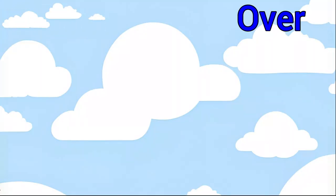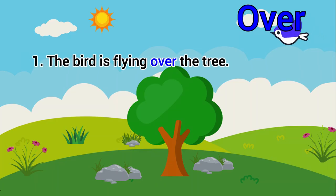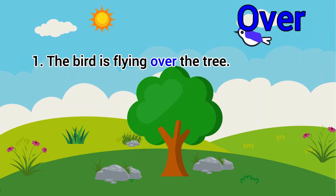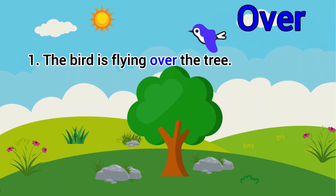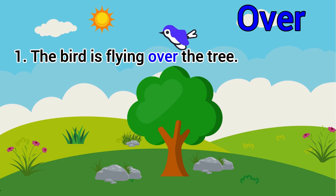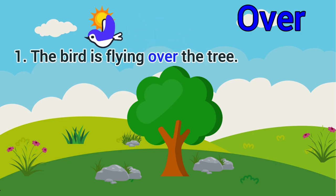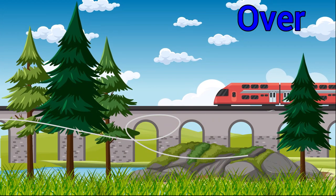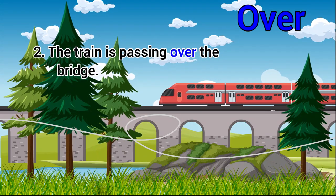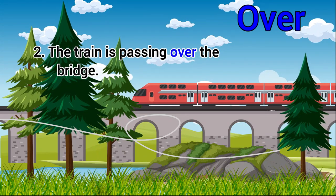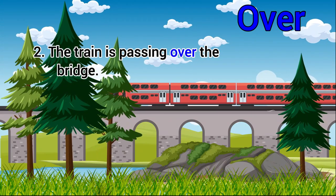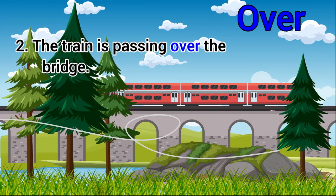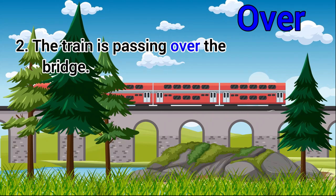Over: The bird is flying over the tree. The train is passing over the bridge.